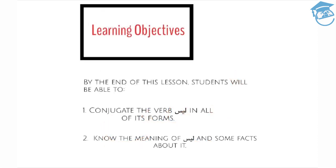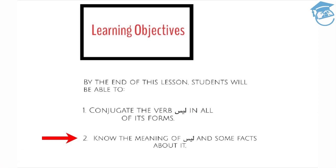Learning Objectives. By the end of this lesson, students will be able to: one, conjugate the verb leysa in all of its forms, and two, know the meaning of leysa and some basic facts about it.